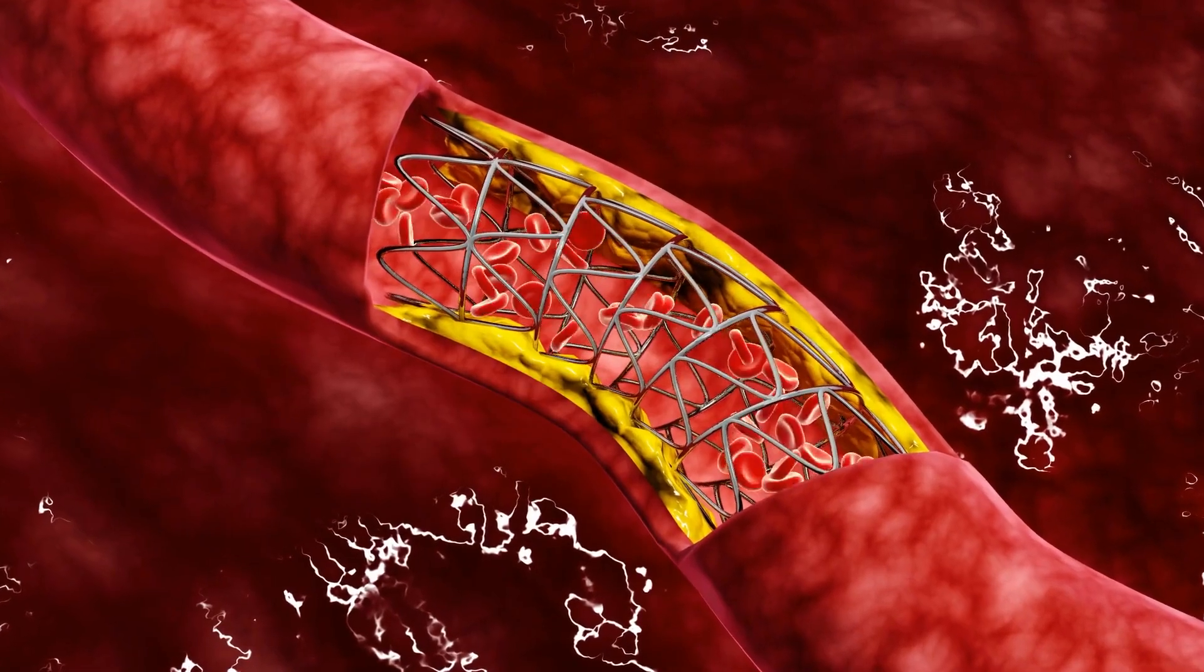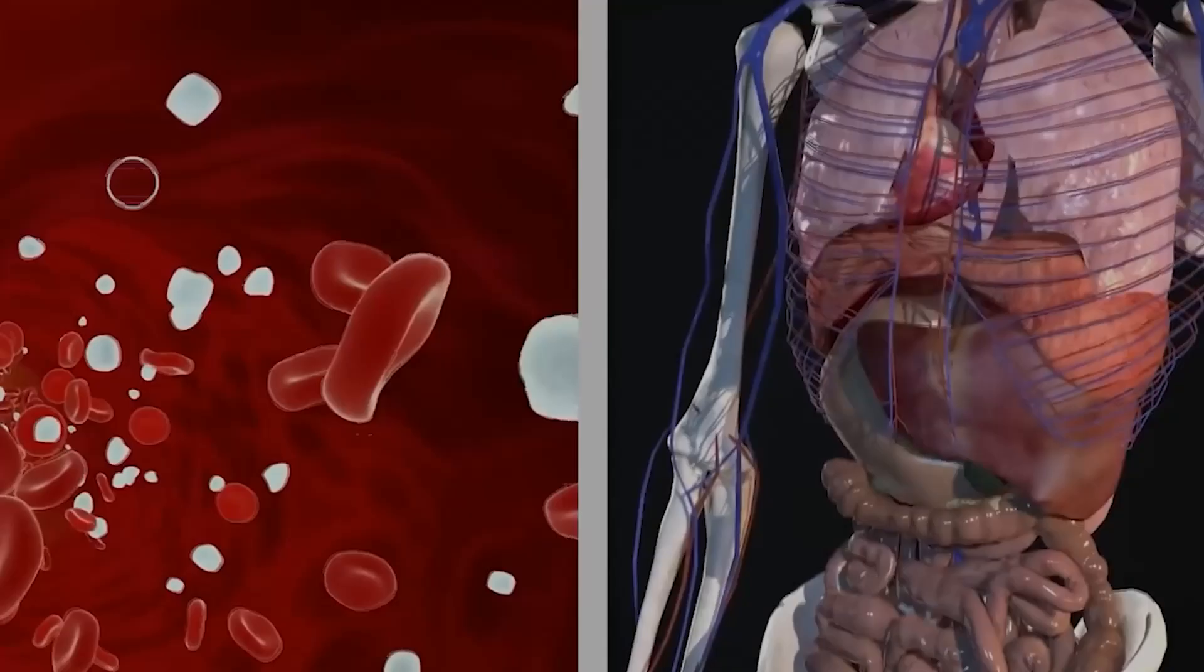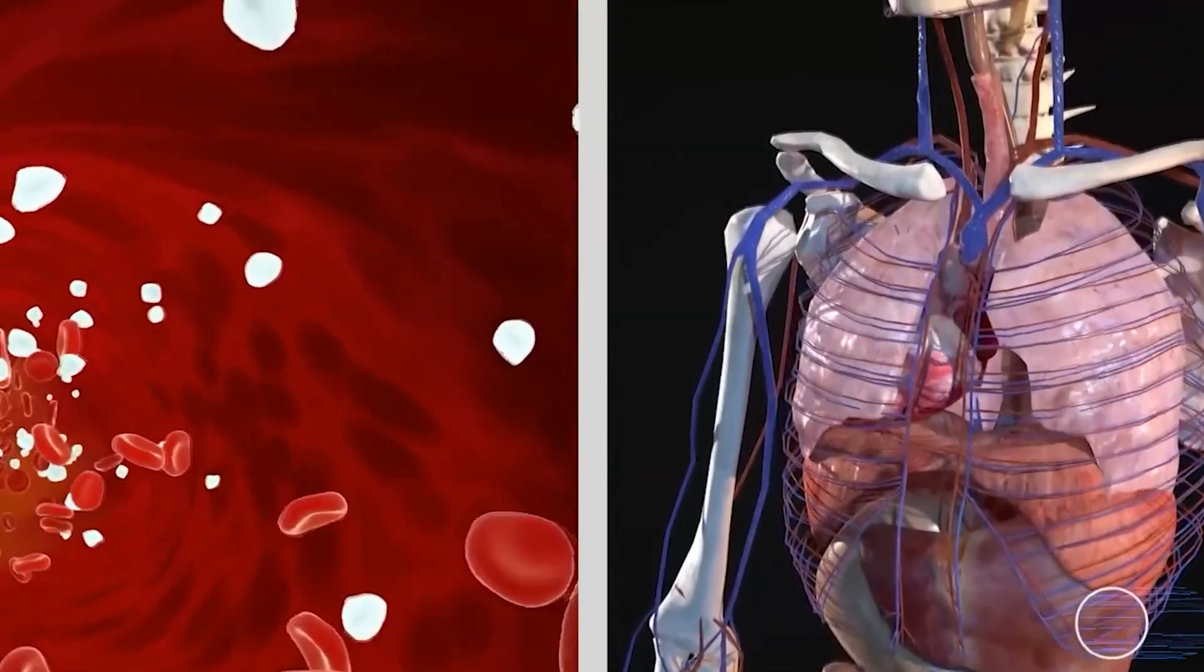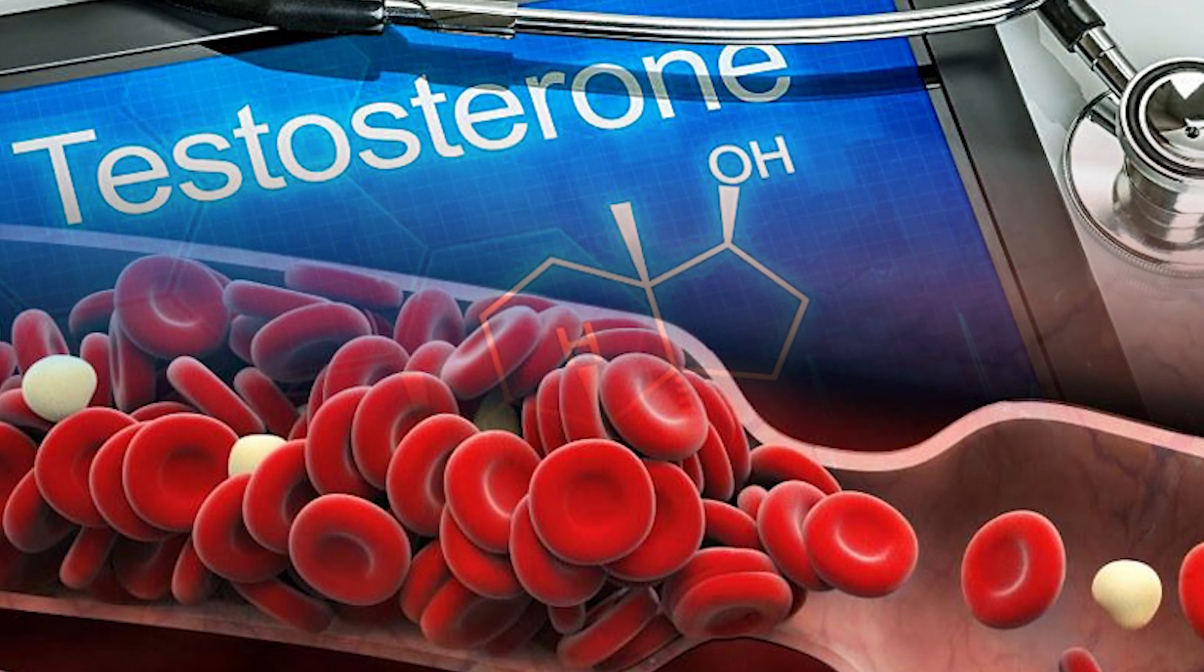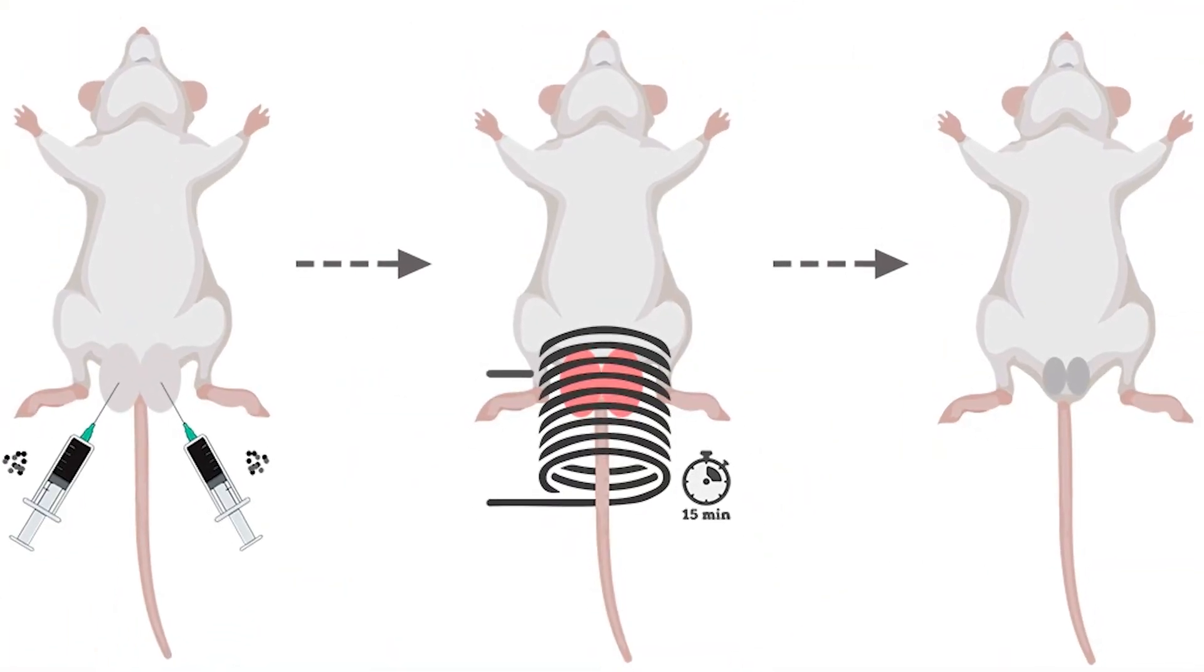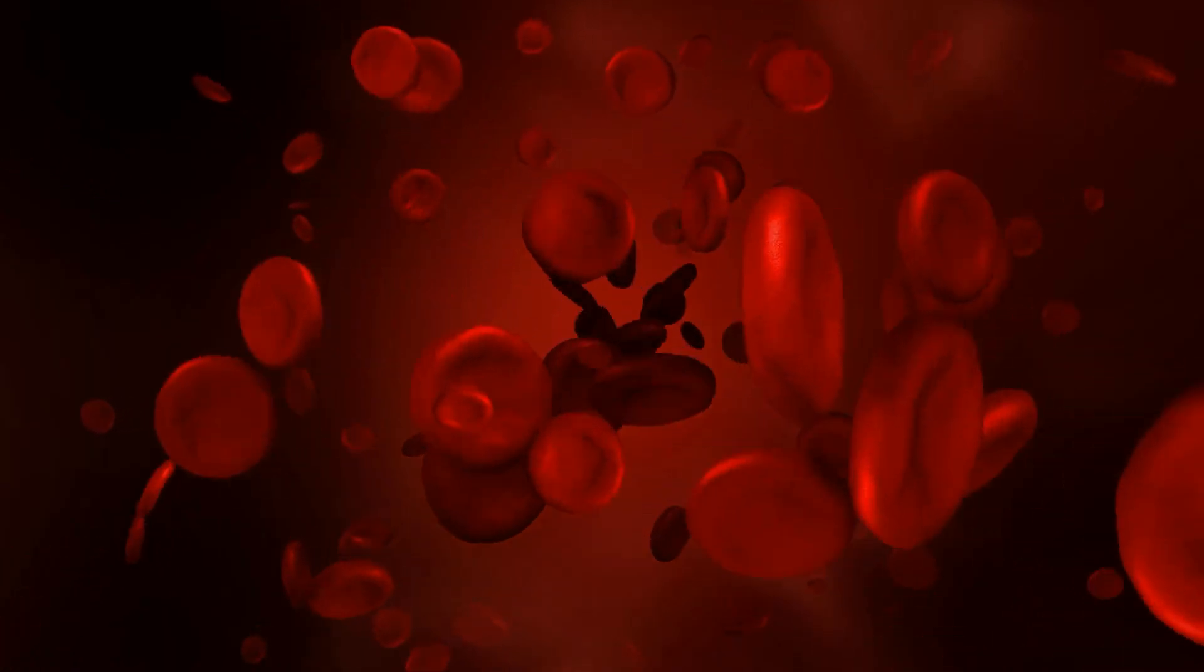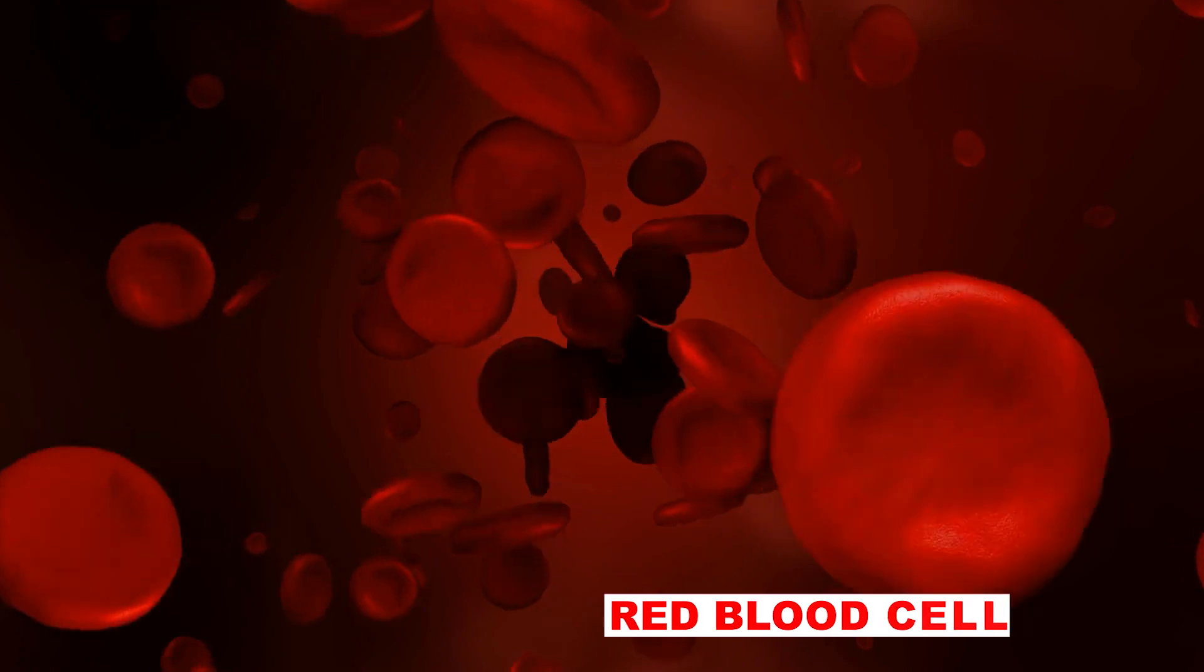Testosterone has also been related to an increase in the body's red blood cell count. Red blood cells are critical because they transport oxygen from the lungs to the rest of your body. Much research has demonstrated that testosterone boosts red blood cell count. In one study, for example, castrated mice were given testosterone dosages, which resulted in an increase in total circulating red blood cell mass and total circulating red blood cell count.